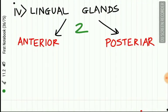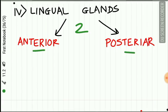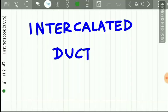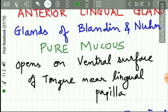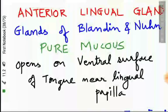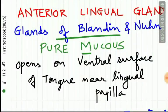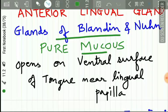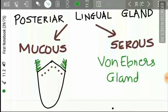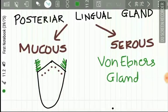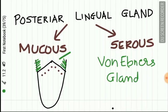The lingual glands are of two groups: anterior lingual glands and posterior lingual glands. The anterior lingual gland is called the gland of Glandinin — these are pure mucus glands that open on the ventral surface of the tongue near the lingual papilla. The posterior lingual glands are of two types: posterior lingual mucus glands and posterior lingual serous glands.